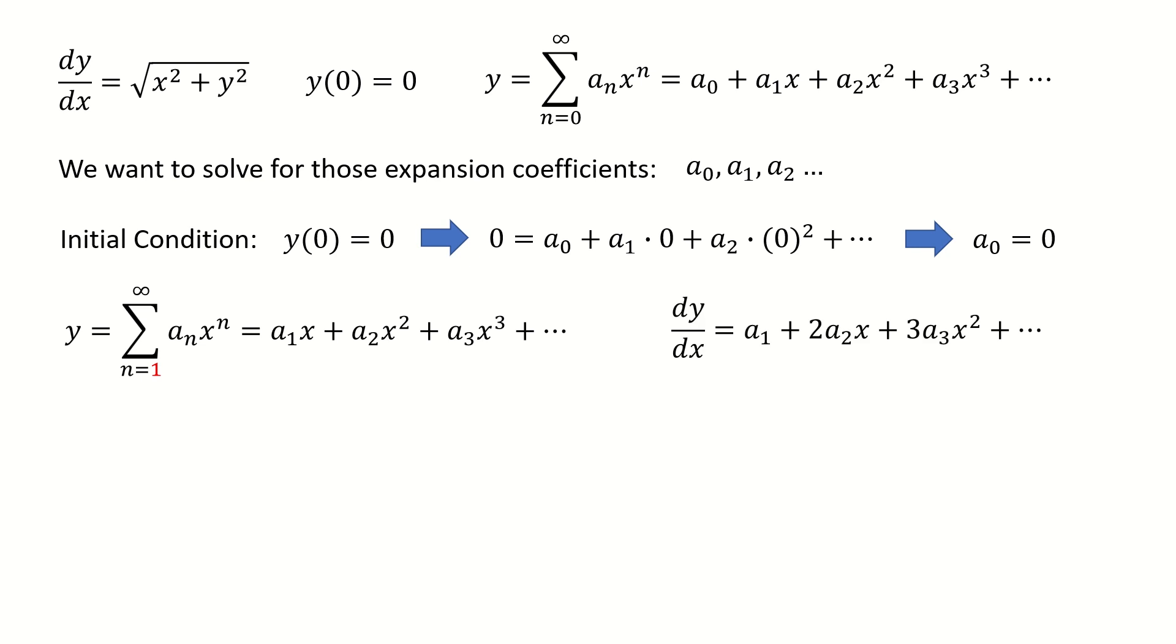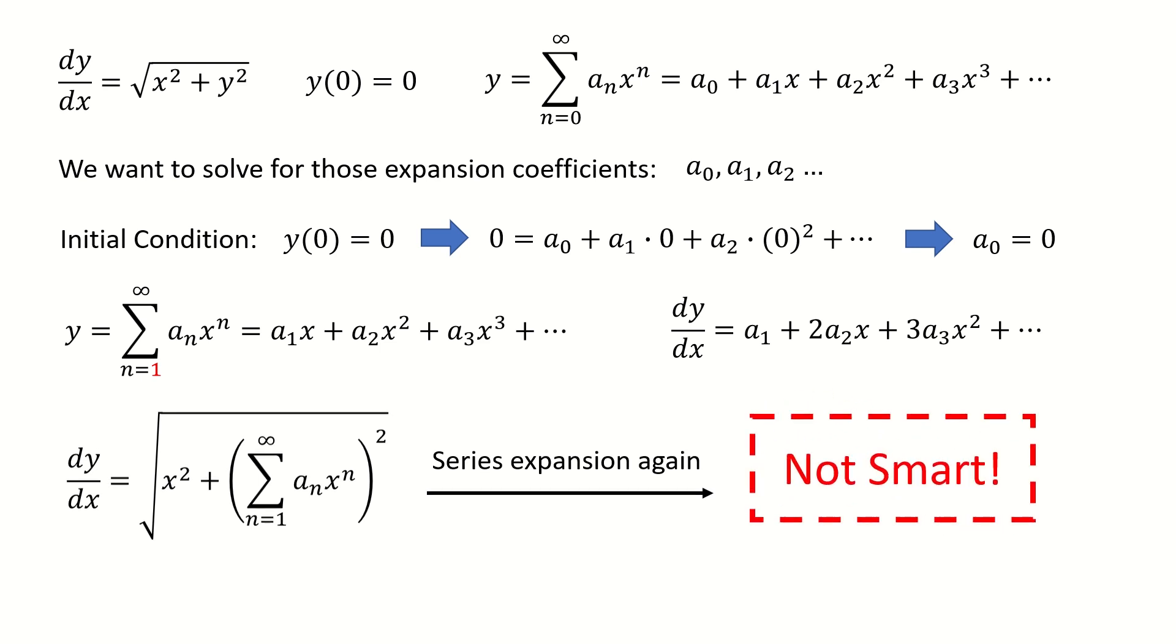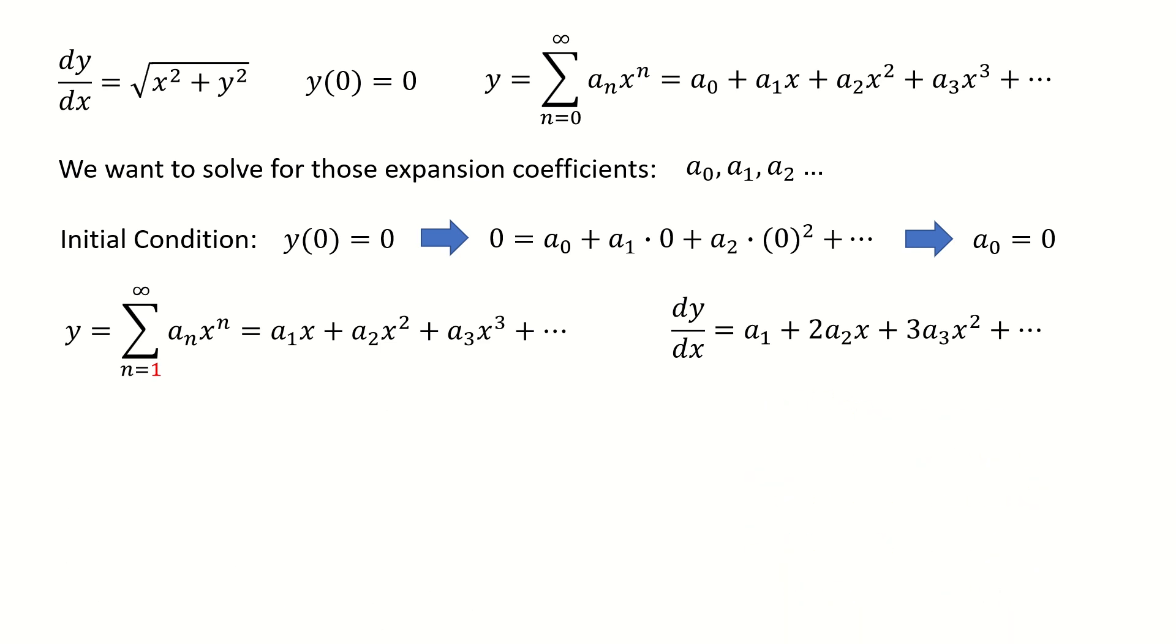And we have two options here. For option 1, we just plug in our solution templates to our original equation. And then we do the series expansion again for those terms inside the square root. But this will be very complicated. So this is not a smart way. And for option 2, we can square both sides. And we got here. And then we plug in those template solutions into this equation.